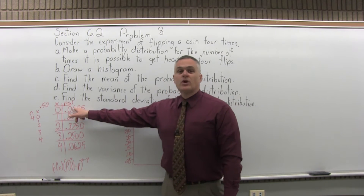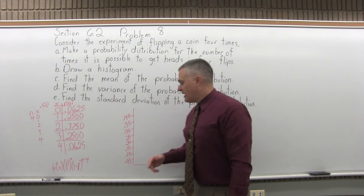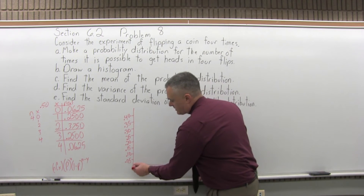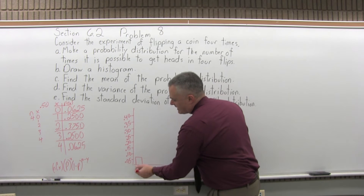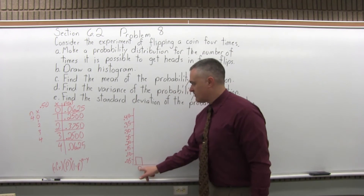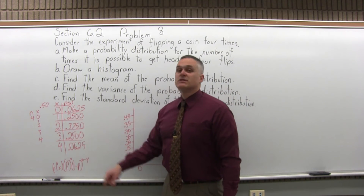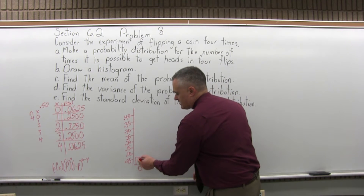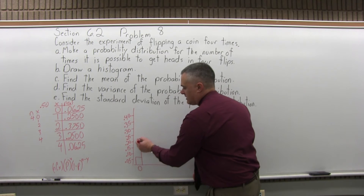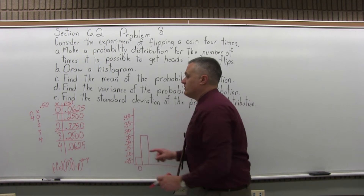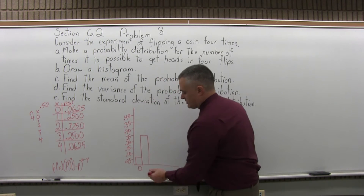The first bar will go to a height of 0.0625. I don't have 0.0625 on my graph, but I'll go a little higher than 0.05. The bar must be vertical, and it looks like about 0.06 something. Under that first bar you put the value from the first column, so 0. The next bar is going to go to 0.25, which I do have on my chart. The bars for the histogram must touch and must be vertical. The number from the first column is 1, so that goes under that bar.